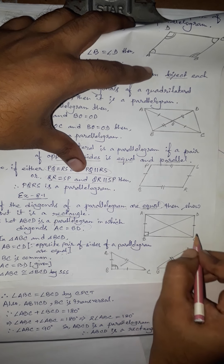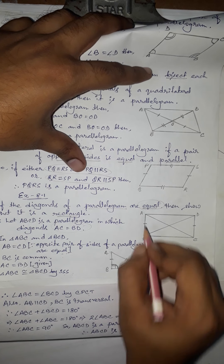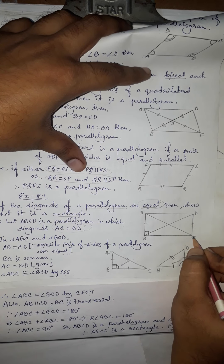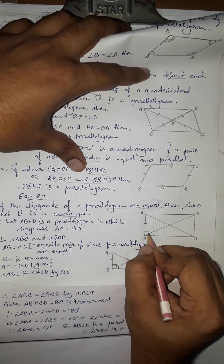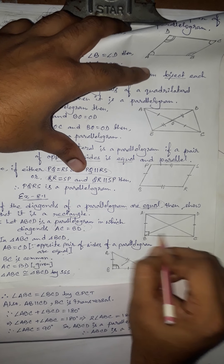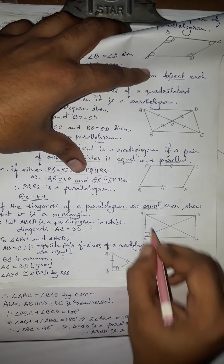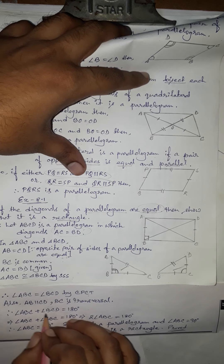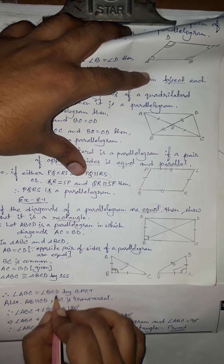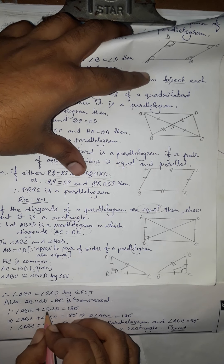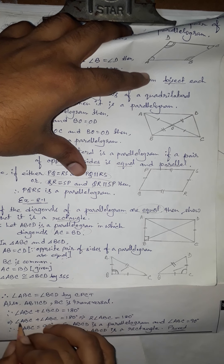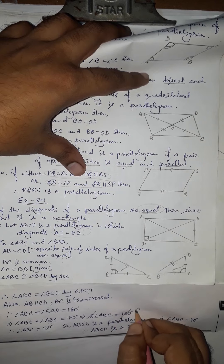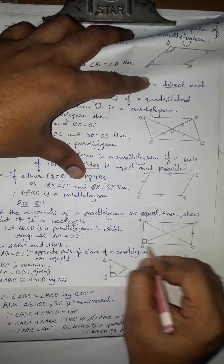In parallelogram ABCD, AB is parallel to CD and BC is a transversal. So the co-interior angles sum to 180 degrees: angle ABC plus angle BCD equals 180 degrees. Since angle ABC equals angle BCD, we can replace angle BCD with angle ABC. So angle ABC plus angle ABC equals 180 degrees, giving 2 × angle ABC equals 180 degrees, therefore angle ABC equals 90 degrees.